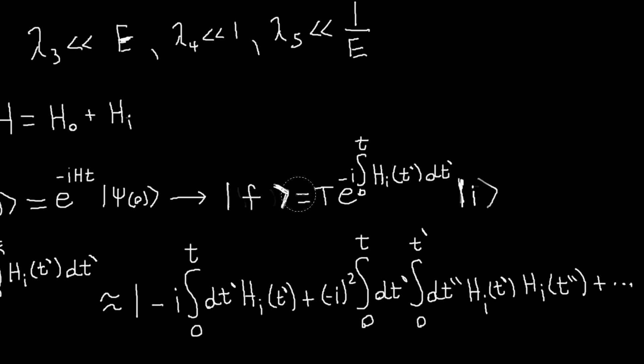that final state will involve some linear combination of singular multi-particle states. And, those could be different from the number of particles in the initial state. So, I don't know if I'm doing a tremendously good job of explaining that, but it'll become more clear in the example that follows. Next video.